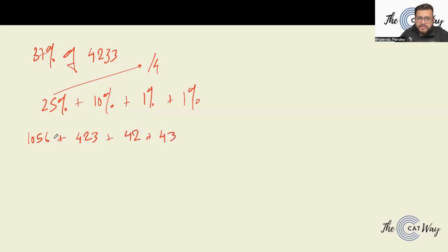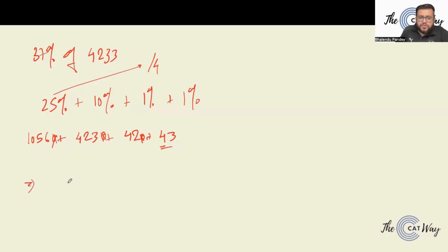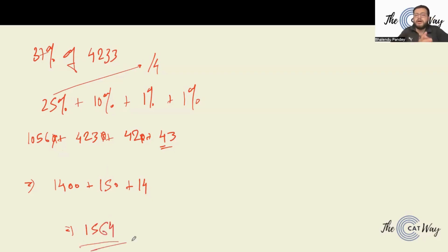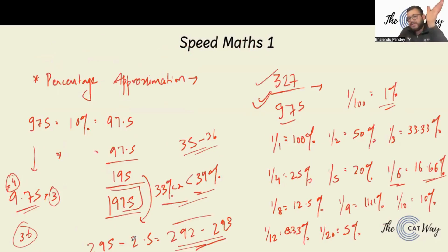Since we've left decimals in the 25% and 10% calculations, we round the second 1% up to 43 to compensate. Adding: 1000 + 400 = 1400. Then 56 + 50 + 20 = 126 → roughly 150. Units: 6 + 3 + 9 + 3 = 21 → carry gives about 14. Final answer: 1400 + 150 + 14 = approximately 1564.